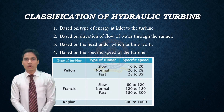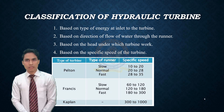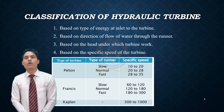The classification of hydraulic turbine. Turbines can be classified on the basis of different parameters. First, based on the type of energy at inlet to the turbine. Second, based on the direction of flow of water through the runner. Third, based on the head under which the turbine works. Fourth, based on the specific speed of the turbine.